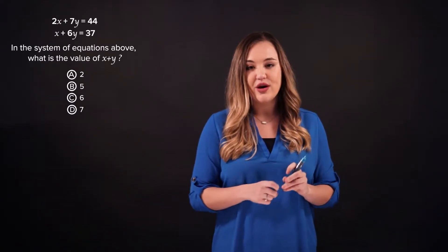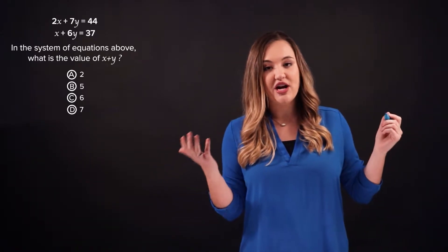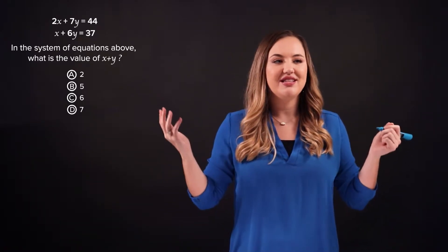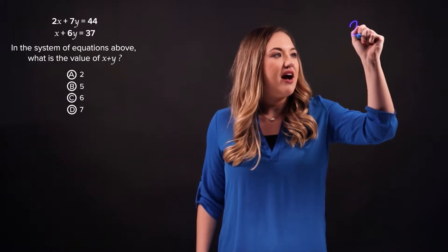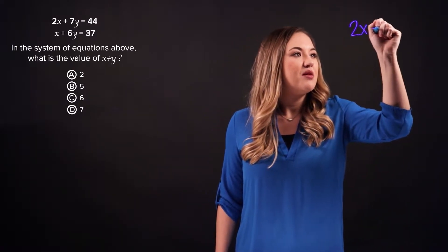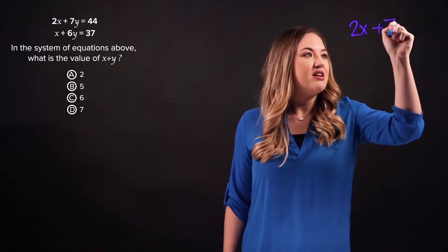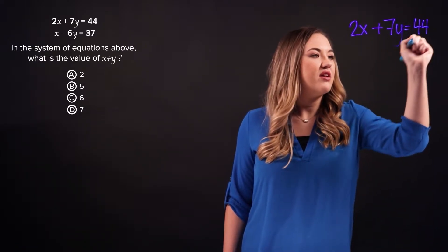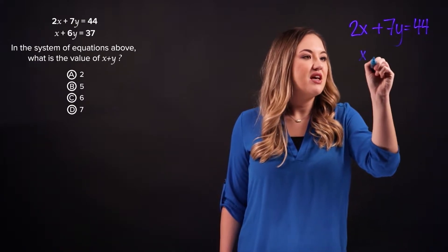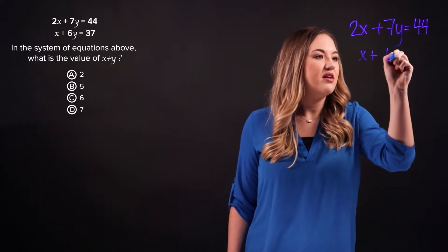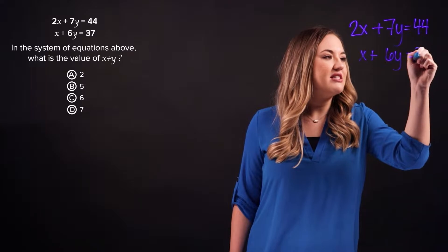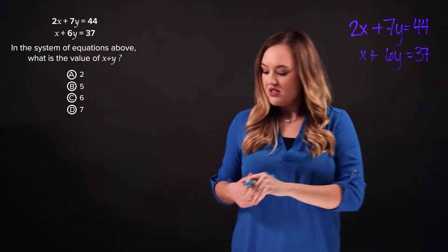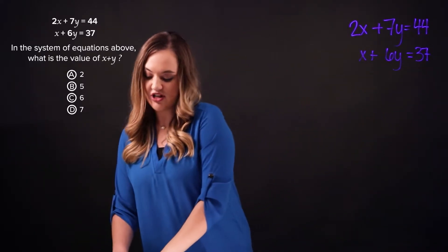So first thing you want to do is check if adding or subtracting the equations results in the desired expression. So let's do that. We have 2x plus 7y equals 44, and we have x plus 6y equals 37. So let's first add it, just to check.